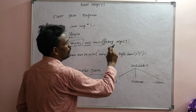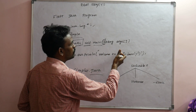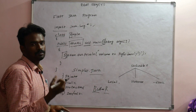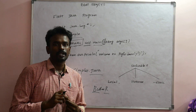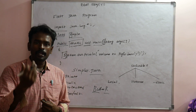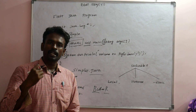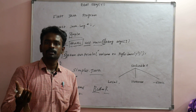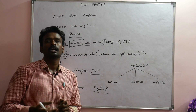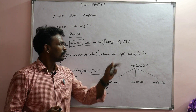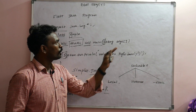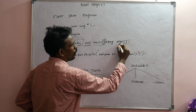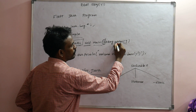The string argument in public static void main accepts command-line arguments. You can pass strings, integers, or other values as arguments. The String args[] is an array that holds command-line arguments passed to the main function.